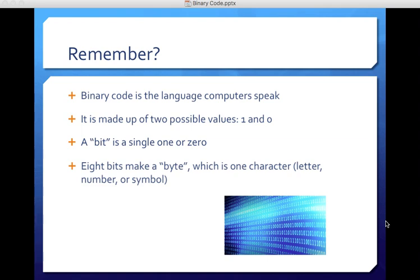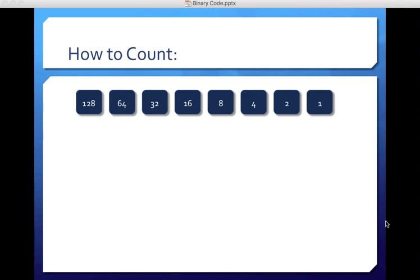This lesson focuses on counting with binary code, and it's actually pretty easy. So here are the eight bits which make up a byte, and each one is given a value. So we've got 1, 2, 4, you'll see they're just doubling, 8, 16, 32, 64, and 128.